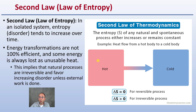In any natural and spontaneous process, entropy either increases or remains constant. An example is heat flow from a hot body to a cold body — that's the natural progression of heat energy. If delta S, the change in entropy, equals zero, it's a reversible process. If delta S is greater than zero, it's considered an irreversible process.